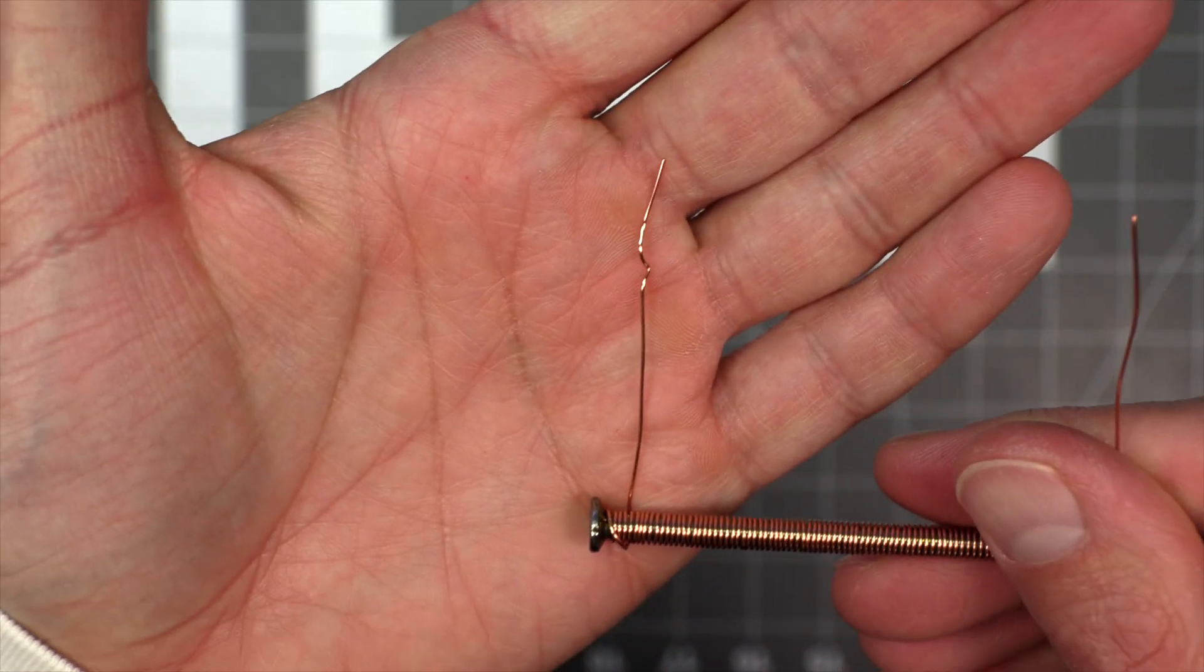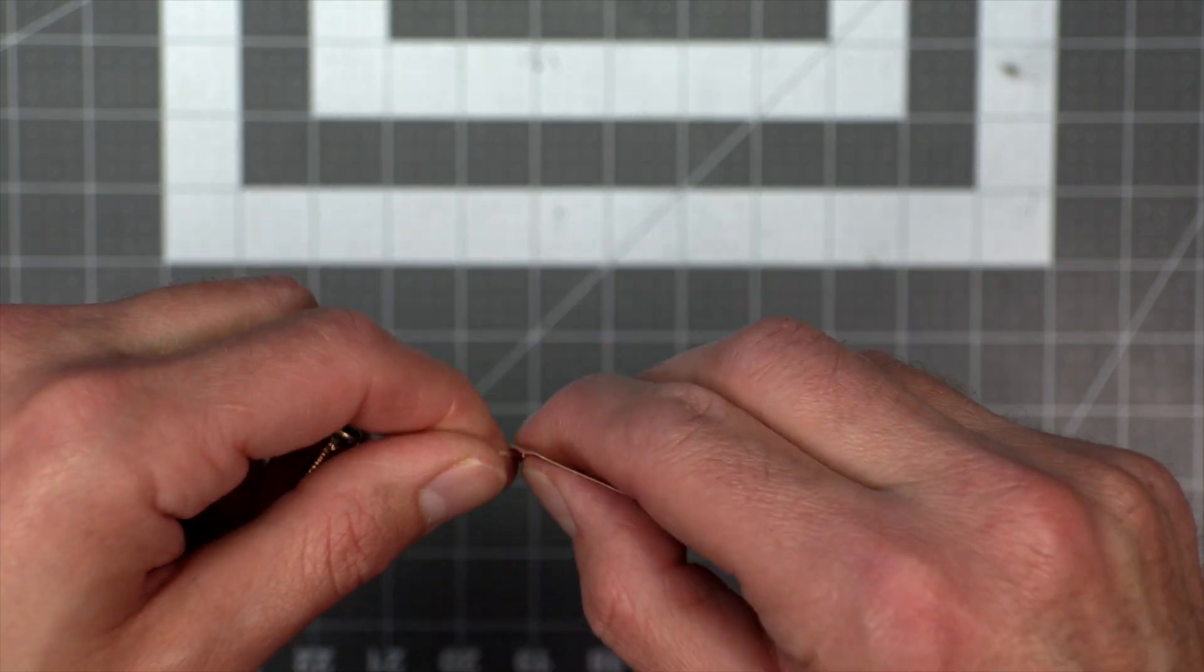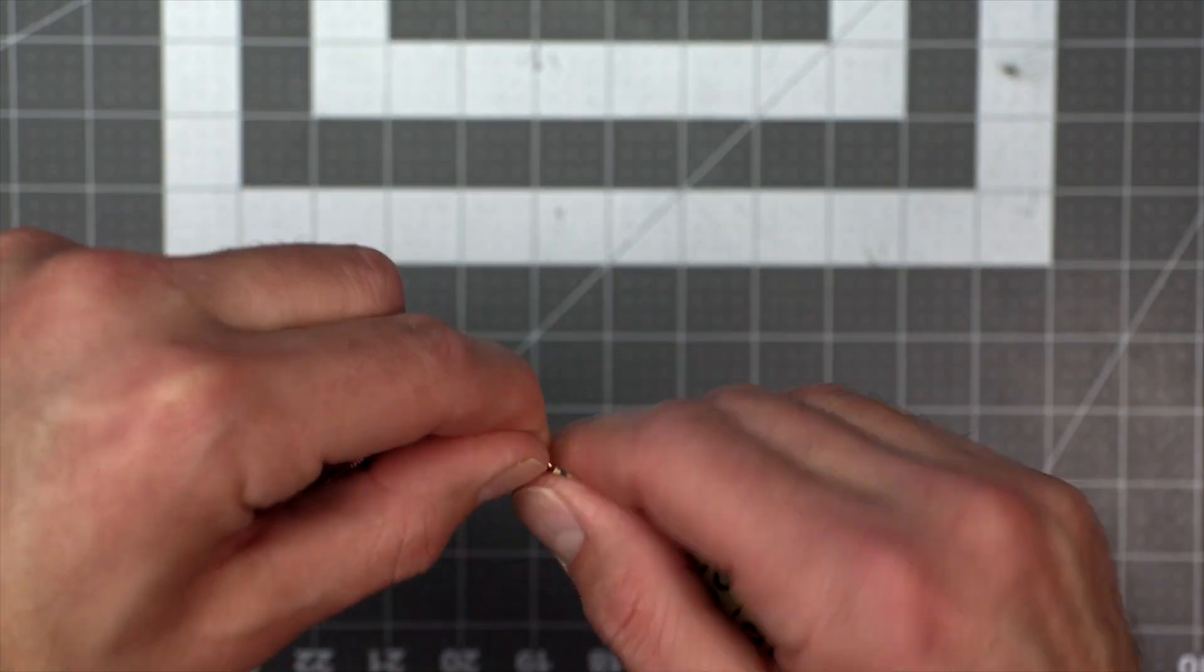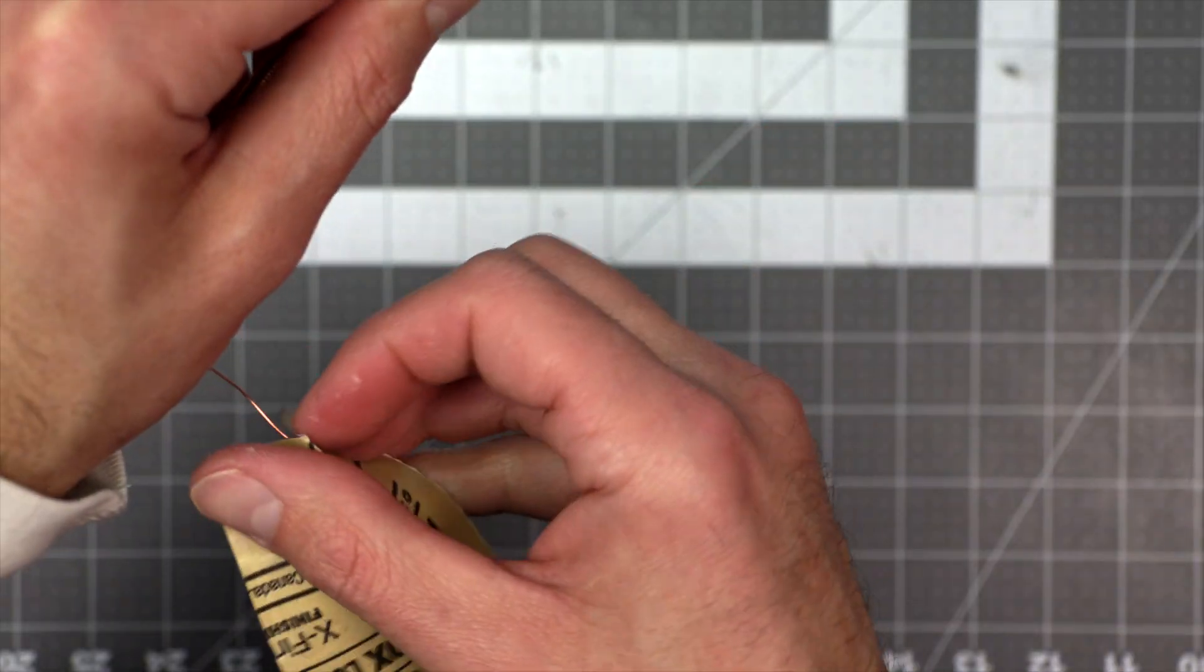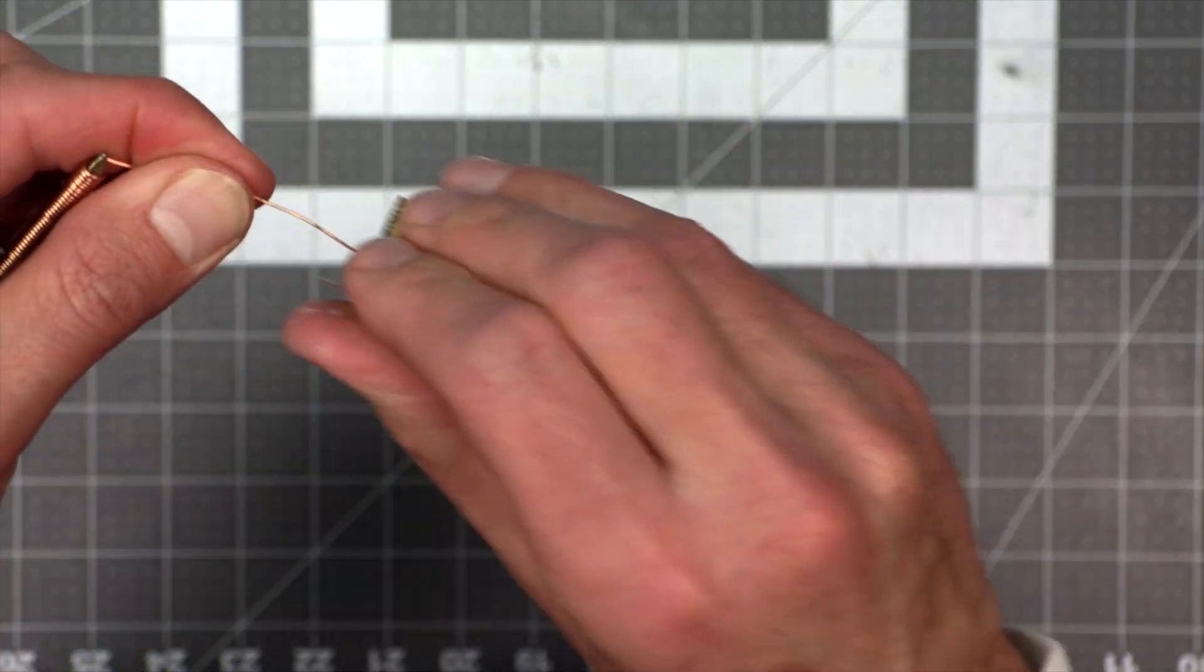This copper wire looks like it doesn't have an insulator over it, but it actually does. It's very thin and see-through. So you're going to have to take the insulator off so you can make an electrical connection with the battery. So just take a little bit of sandpaper and sand off each end of the wire.